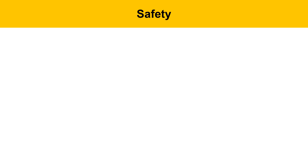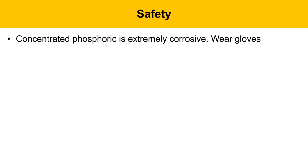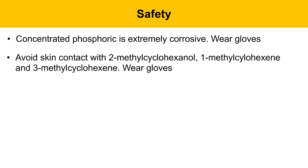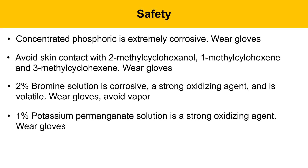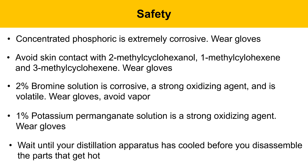There are safety concerns for today's experiment. Concentrated phosphoric acid is extremely corrosive — wear gloves. Avoid skin contact with the starting alcohol 2-methyl cyclohexanol and the alkene products 1-methyl cyclohexene and 3-methyl cyclohexene; wear gloves when handling them. 2% bromine solution is corrosive, a strong oxidizing agent, and volatile — wear gloves and avoid the vapor. 1% potassium permanganate solution is a strong oxidizing agent; wear gloves when handling it.